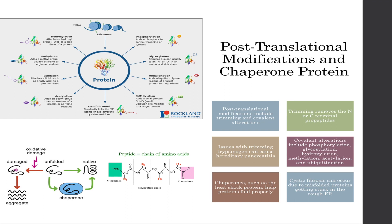When the protein is made, there is an N-terminal and a C-terminal. The N-terminus, which is also known as the amino terminus, NH2 terminus, or N-terminal end, is the start of a protein or polypeptide. The C-terminus is the end of the amino acid chain and it has a free carboxyl group, the COOH. Now that we know what the N-terminus and C-terminus are, we can talk about trimming.